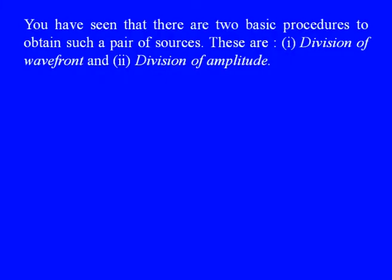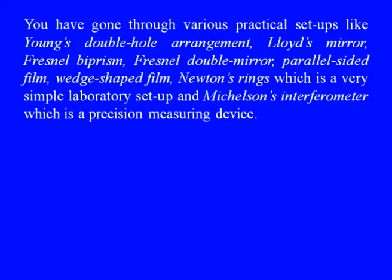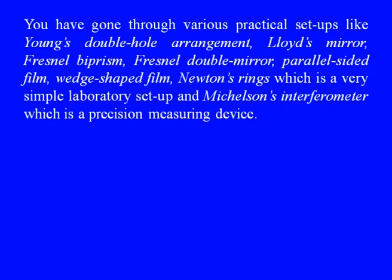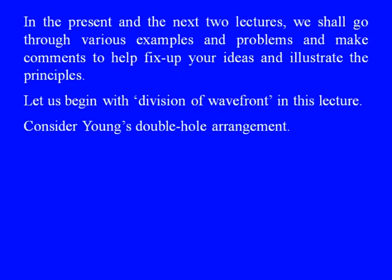There are two basic procedures to obtain such a pair of coherent sources: division of wavefront and division of amplitude. We have gone through various practical setups like Young's double hole arrangement, Lloyd's mirror, Fresnel biprism, Fresnel double mirror, parallel-sided film, wedge-shaped film, Newton's rings — a very simple laboratory setup — and Michelson's interferometer, which is a precision measuring device. In the present and the next two lectures, we shall go through various examples and problems to help fix up your ideas and illustrate the principles. Let us begin with division of wavefront in this lecture.